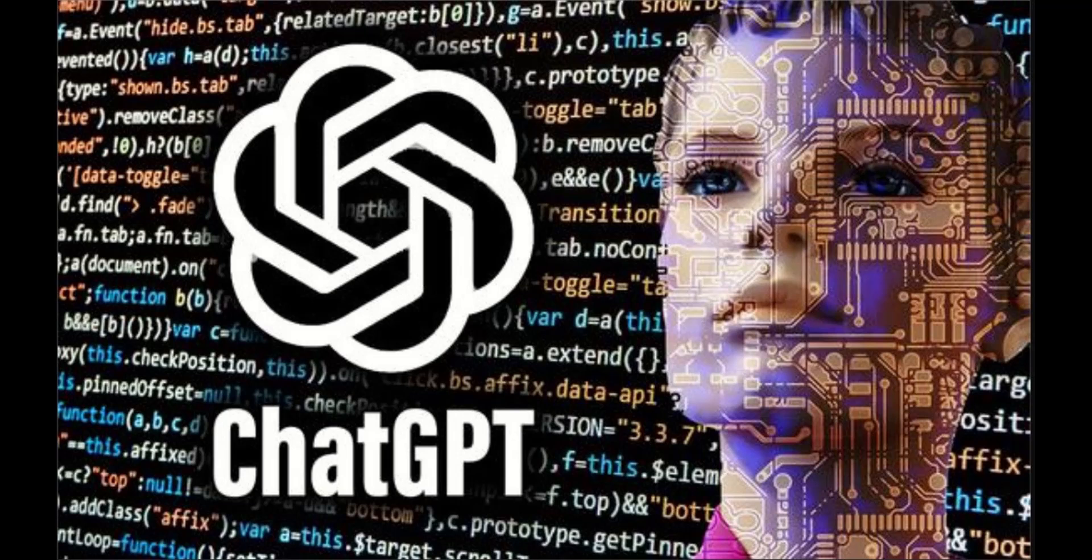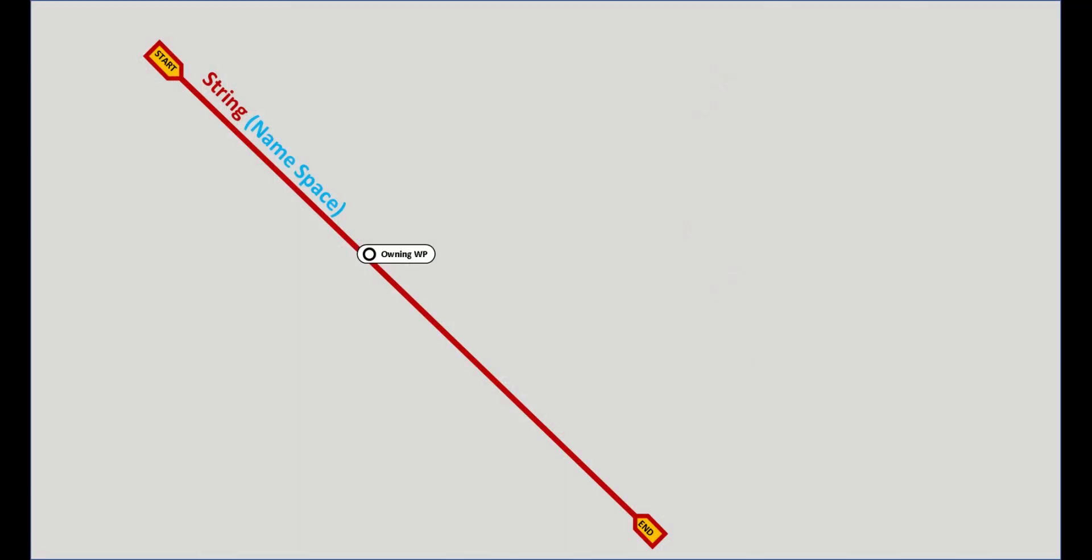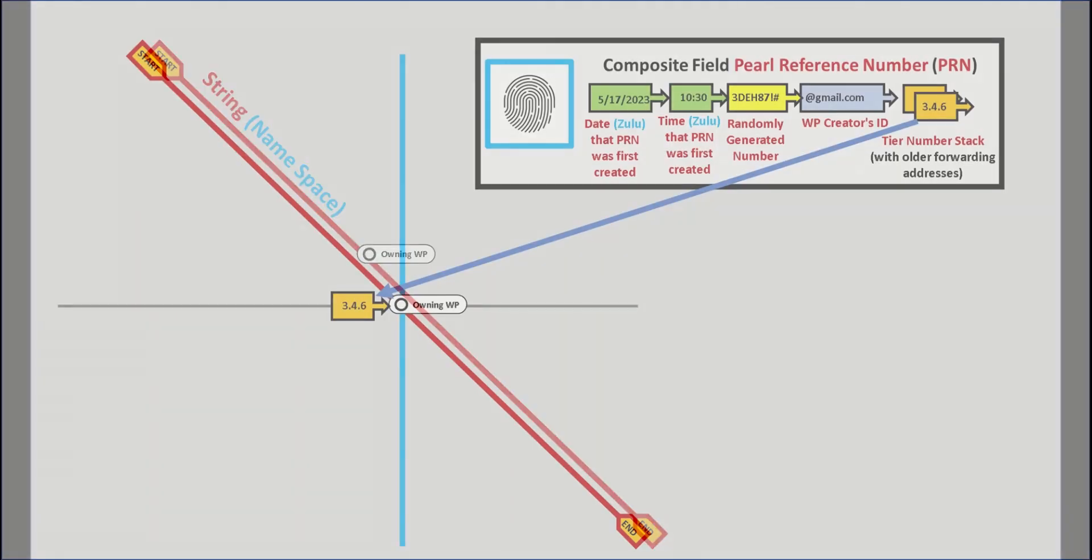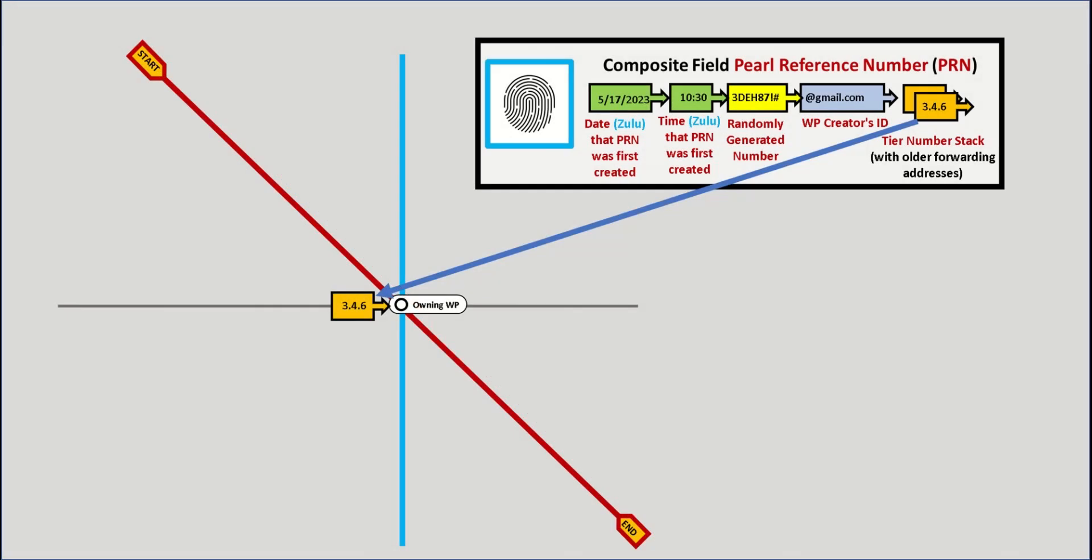We last left off discussing the White Pearl PRN tag. For each or any white pearl, one has a wide range of display options on how these tags can be displayed to any model viewer. For example, the MV can have just the latest tier PRN displayed, or alternatively, the MV can have the entire stack of tier PRNs displayed as a stack, with the latest on top and the oldest on the bottom.